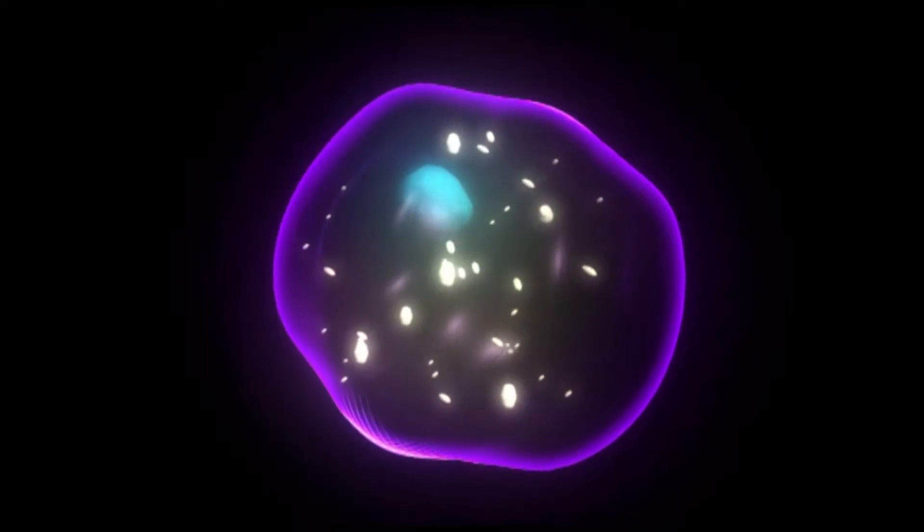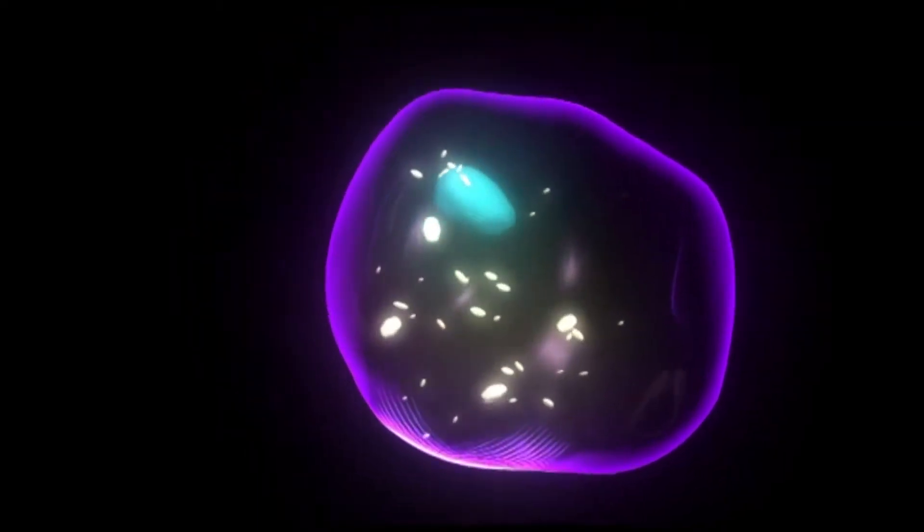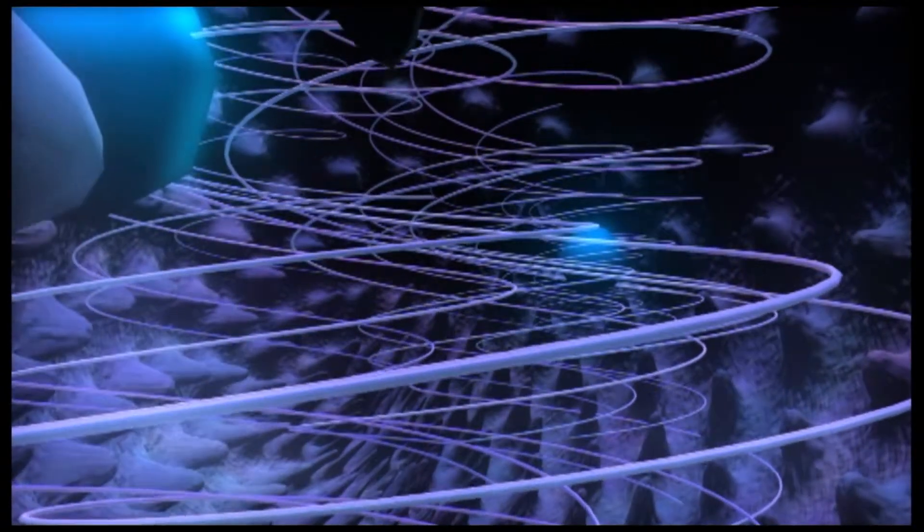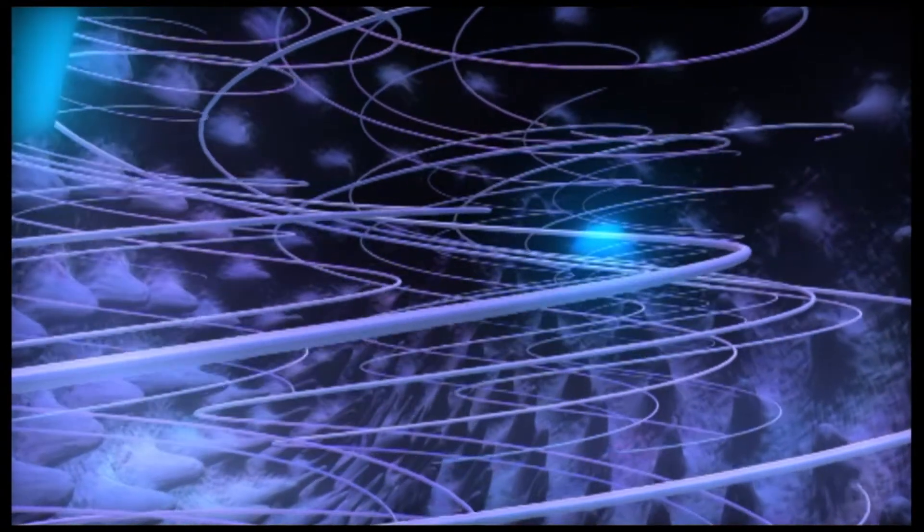prophase, metaphase, anaphase and telophase. In the first phase, prophase, chromosomes become more visible and condense, becoming shorter and thicker.